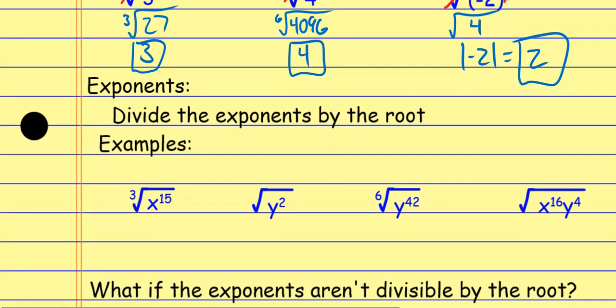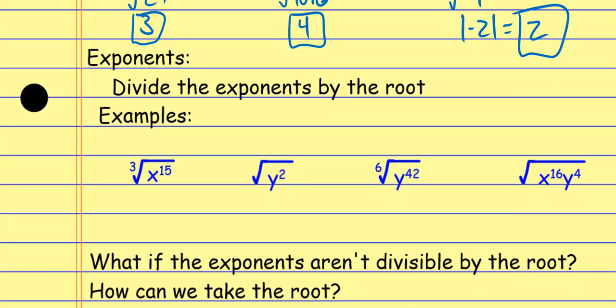When doing roots of variables, we just divide the exponents. As a refresher of rules of exponents: when you add, exponents stay the same; when you subtract, they stay the same; when you multiply, you add the exponents; when you divide, you subtract the exponents; when you raise to a power, you multiply the exponents. And now with roots — when you take a root, you divide the exponents.